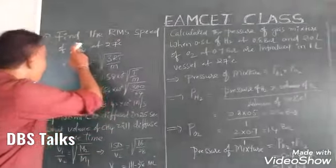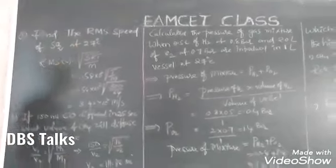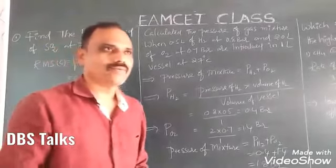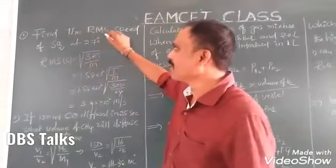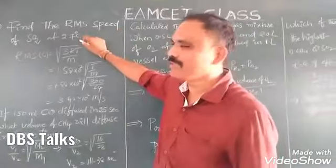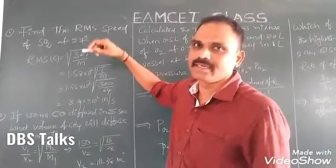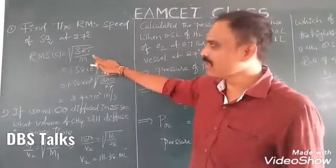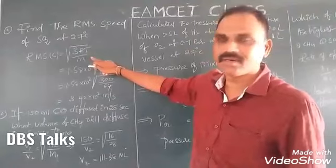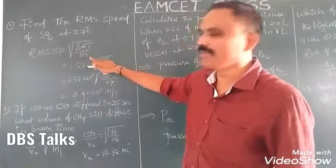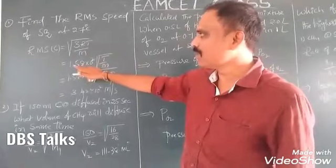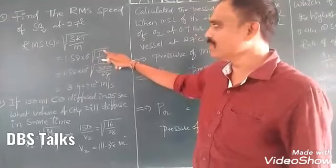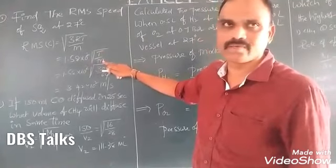Look here. First, RMS Speed or RMS Velocity of SO2 at 27 degrees centigrade. The RMS velocity of any gas is always calculated by using the formula: C is equal to 1.58 × 10² multiplied by the square root of T by M, where T is temperature and M is molecular weight.